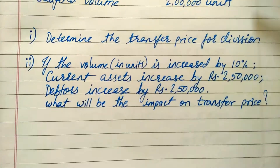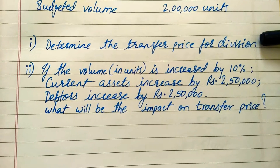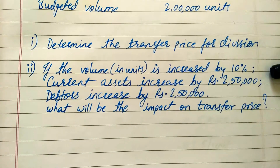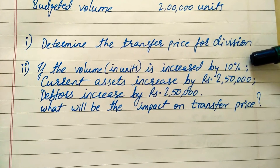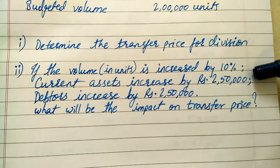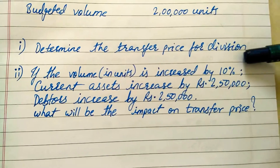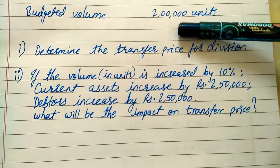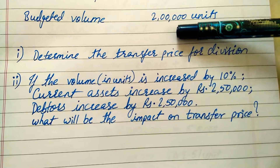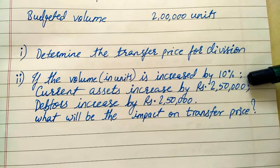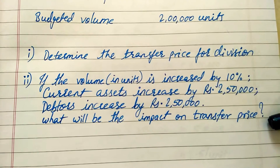There are two questions. First, determine the transfer price for the division based on the cost plus 20% of ROI method. Second, if the volume in units increases by 10% — from 2,00,000 to 2,20,000 units — and the current assets increase by ₹2,50,000 and debtors also increase by ₹2,50,000, what will be the impact on the transfer price?